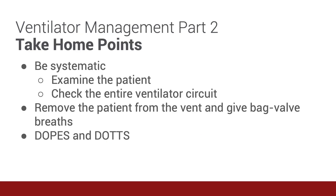To summarize the take-home points: be systematic in your assessment. When something happens, like a ventilator alarm, check the patient, focus on the cardiopulmonary examination, and look for signs of pneumothorax or excessive PEEP. Check the vent starting from the wall with the power source and oxygen supply, follow these to the machine, then follow the ventilator tubing to the patient. Make sure the power is on and oxygen is flowing, and the tank is not empty. If no problem is easily identified, remove the patient from the vent and bag with 100% oxygen. Remember the DOPS and DOTS checklists for identifying vent problems and common alarms — suction if necessary, and consider causes of agitation, shock, or hypoxia in the vented patient.